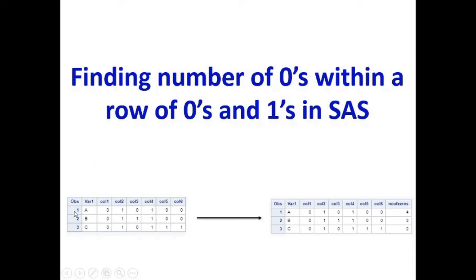In this example, we have every row with column 1 to column 6 with either zeros or 1. And our goal is to find how many number of zeros are there in each row.